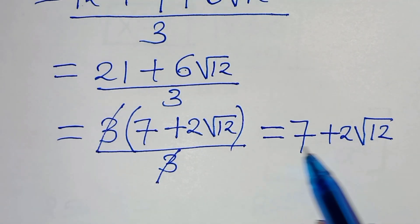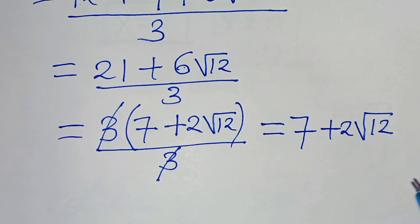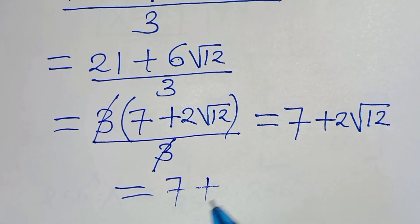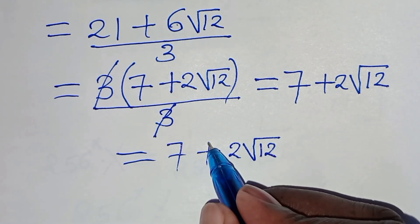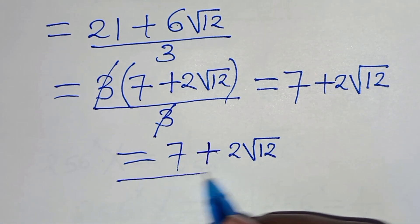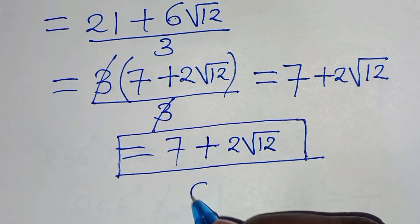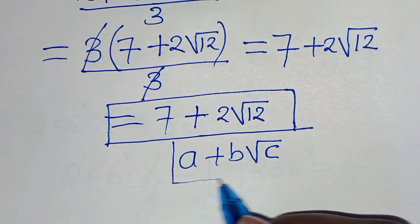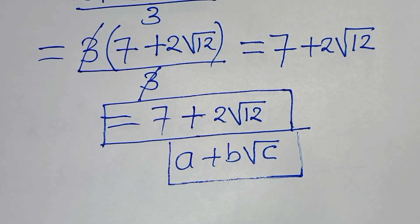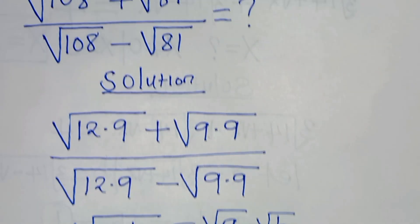This is the solution to this problem: 7 plus 2 square root of 12. We leave this answer in the form A plus B square root of C. Thank you for watching, like this video and subscribe — see you in the next video, bye-bye.